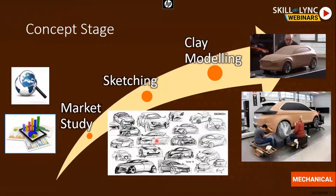The automobile styling engineers first do sketching. They create different modified versions of the car considering all the styling factors and features of the external parts, and they do it for all views — the front view, side view, and rear view — completely showing how the actual car will look after it is produced.